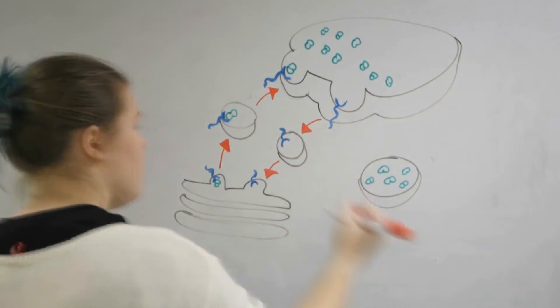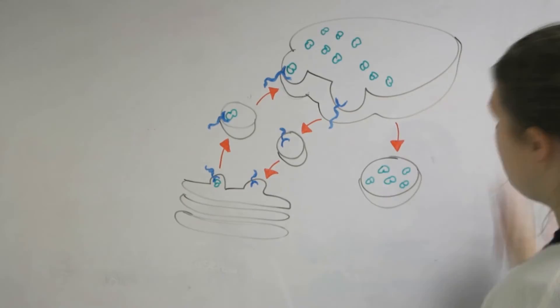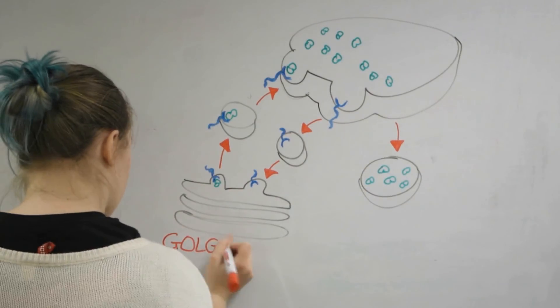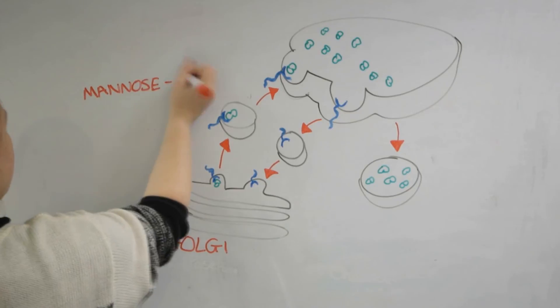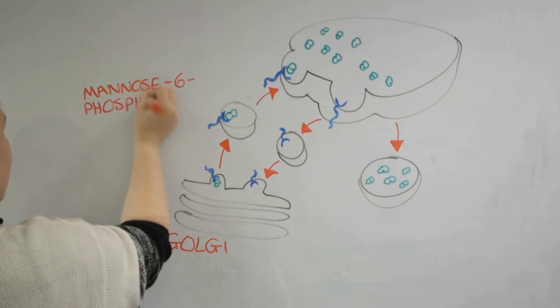The transport vesicles will travel to the late endosome and fuse with it to release the contents of acid hydrolase.